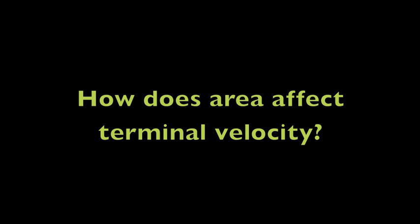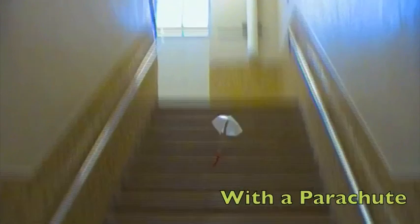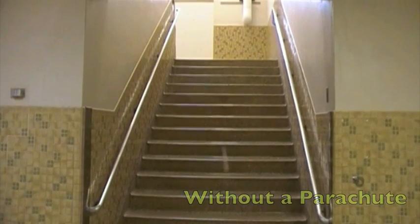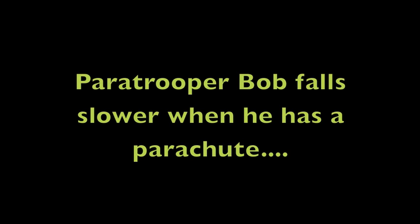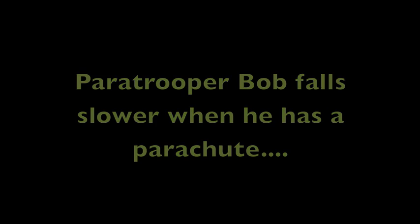We now know how mass affects terminal velocity, but how does area affect it? So if Paratrooper Bob goes parachuting, what will happen if he falls with a chute as opposed to without one? Bob falls much slower when he has his parachute on, but why?